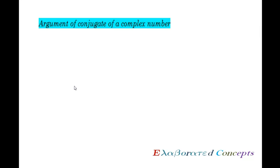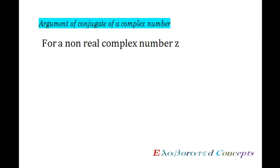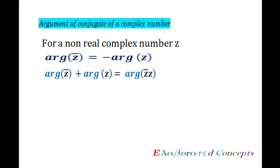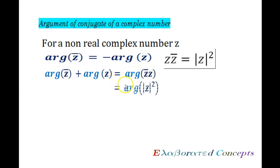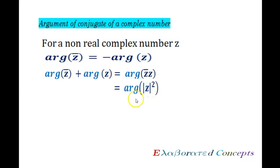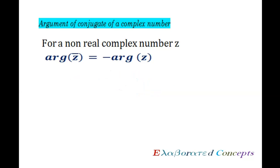Next is argument of conjugate of a complex number. For a non-real complex number z, argument of z conjugate is equal to minus argument of z. To derive this: argument of z conjugate plus argument of z equals argument of z conjugate times z, using the property of the product of argument of complex numbers. This equals argument of mod z squared, since z times z conjugate equals mod z squared. And mod z squared is a positive real number, therefore its argument is 0. Therefore argument of z conjugate equals minus argument of z.